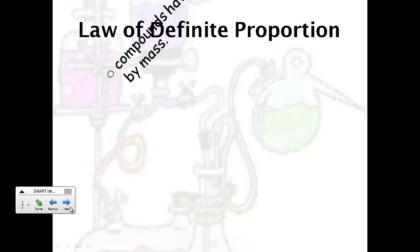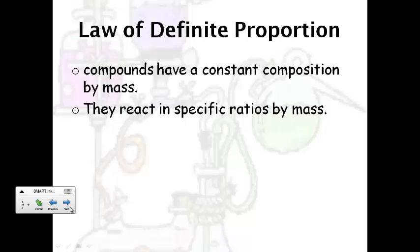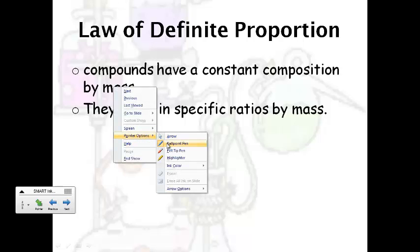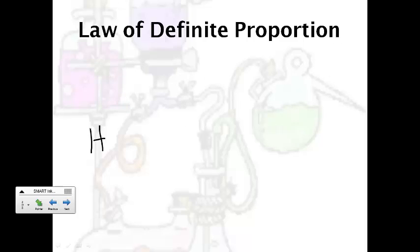First let's talk about the law of definite proportions. It says that compounds have a constant composition by mass and that they react in specific ratios by mass. Let's say we were talking about the compound H2O, water.